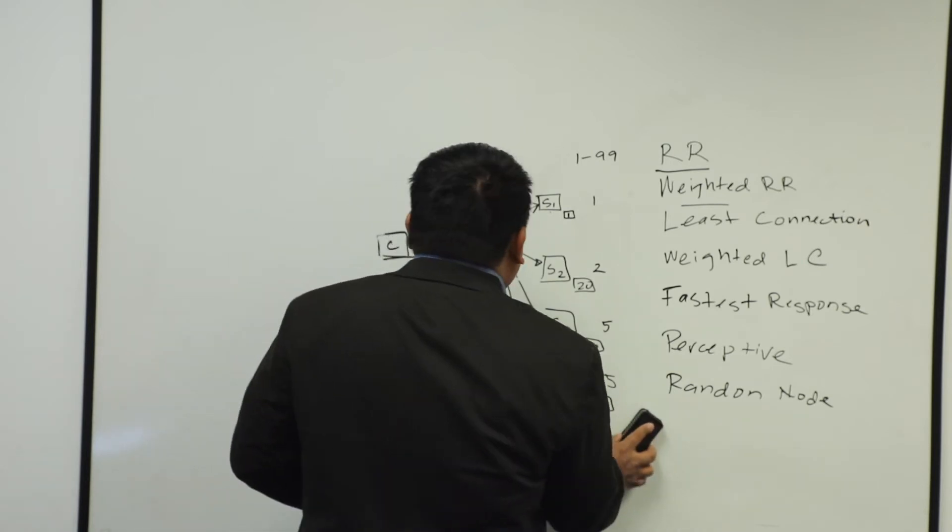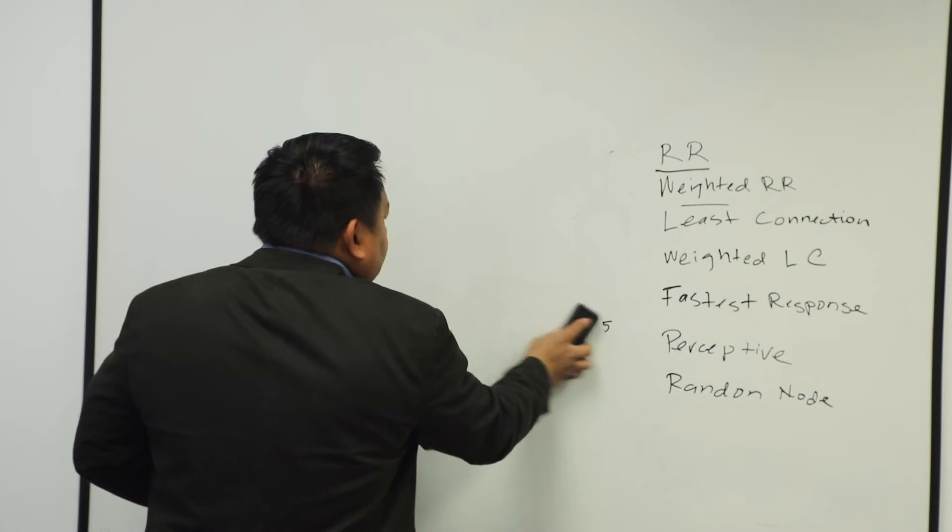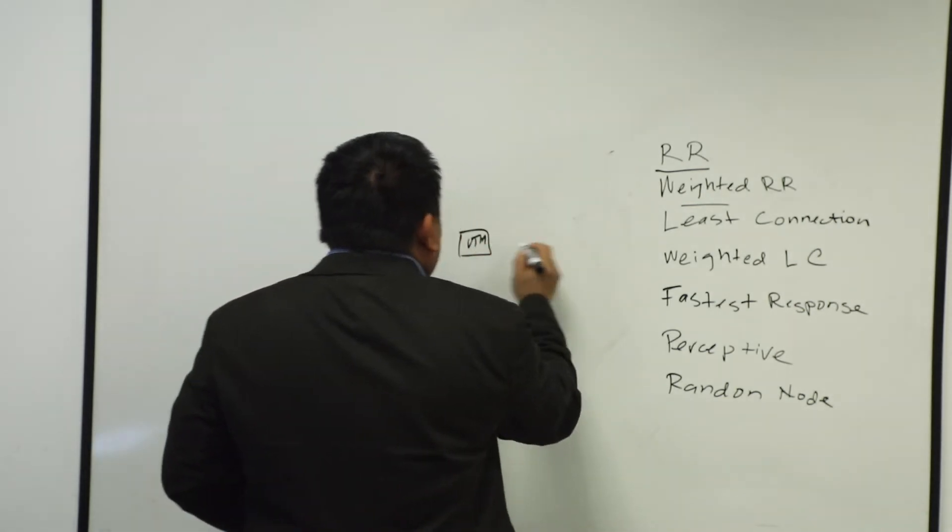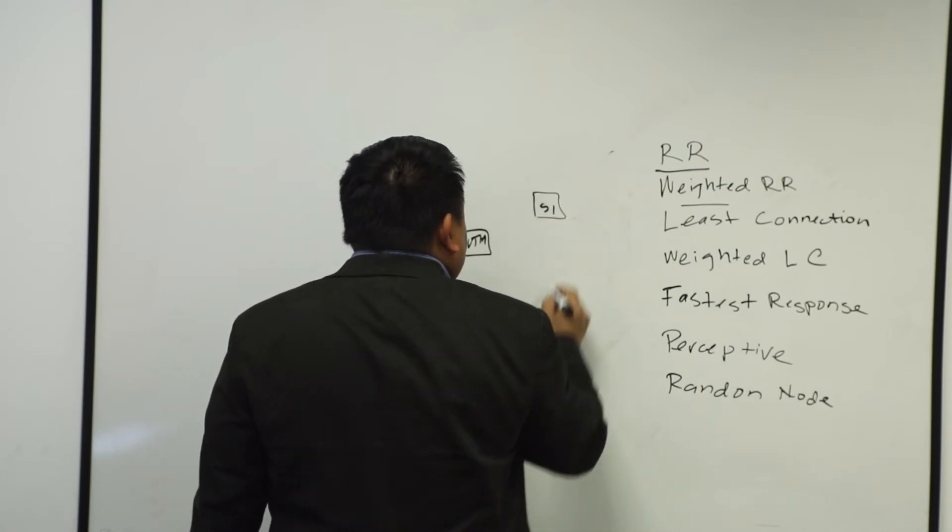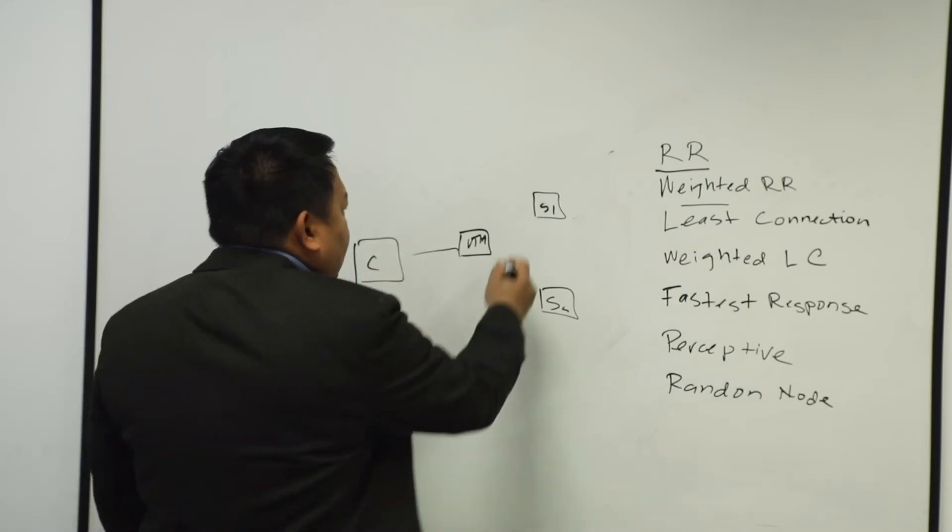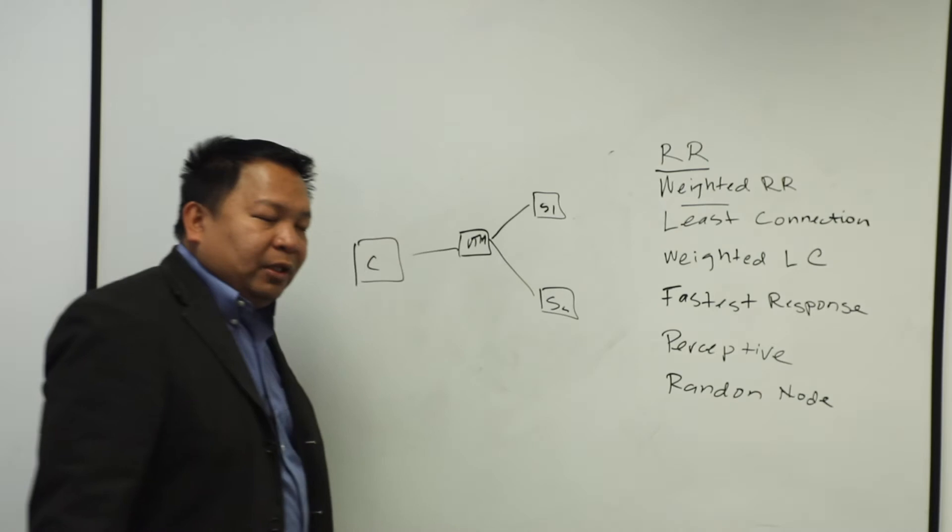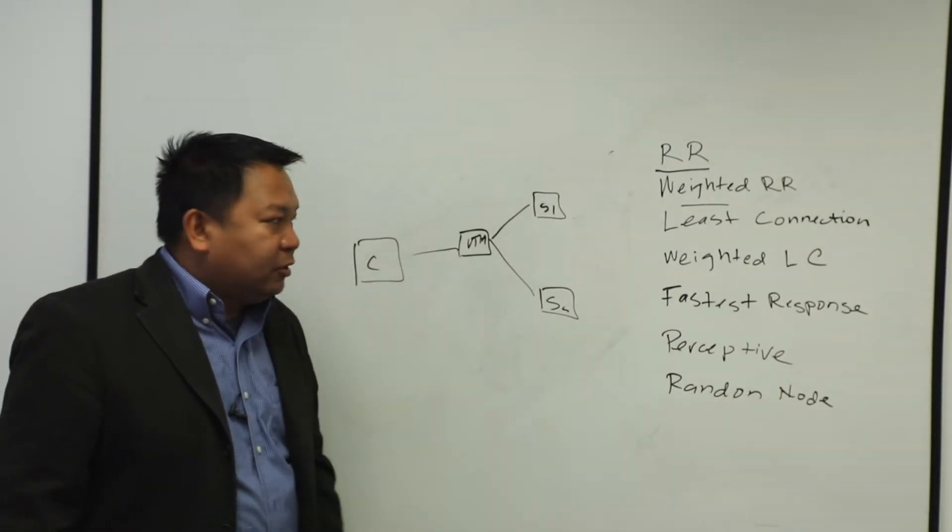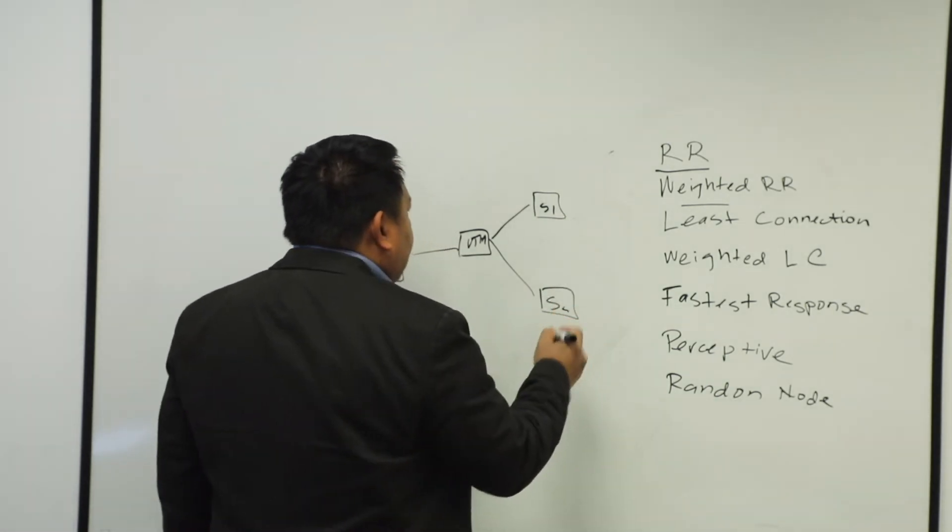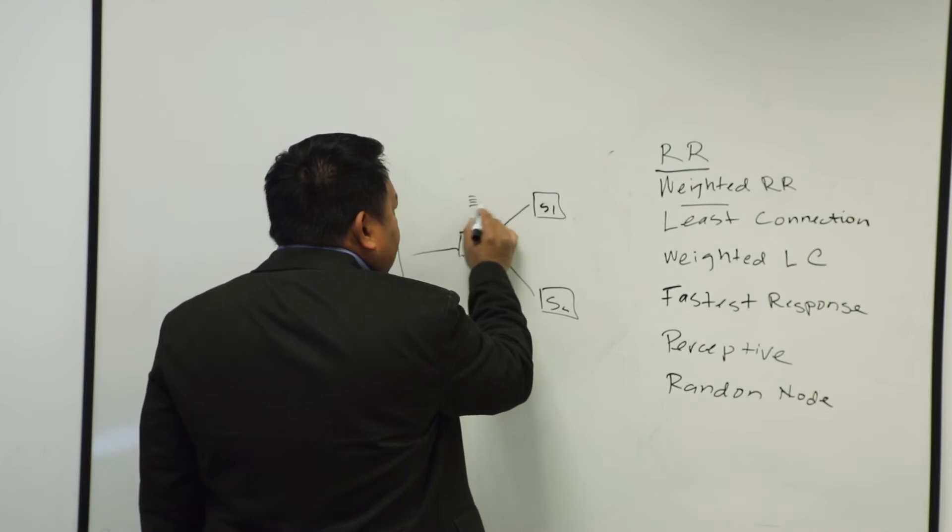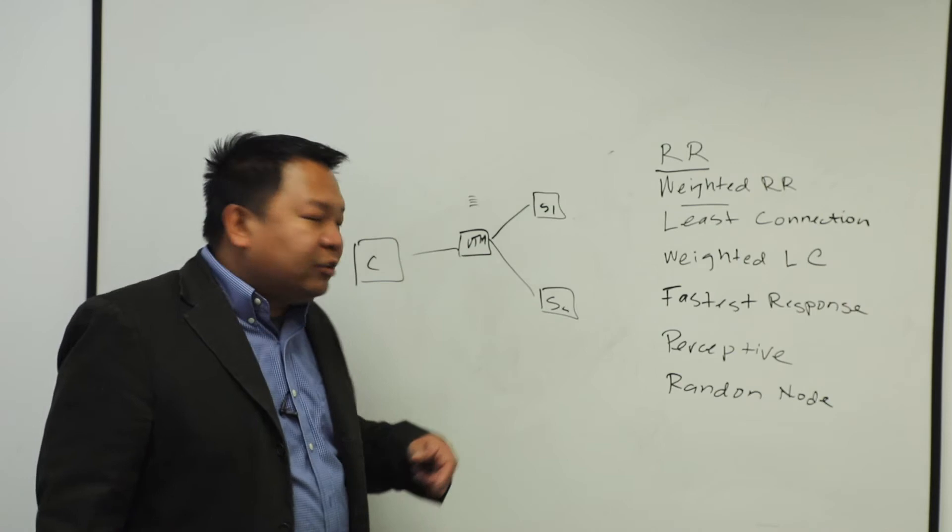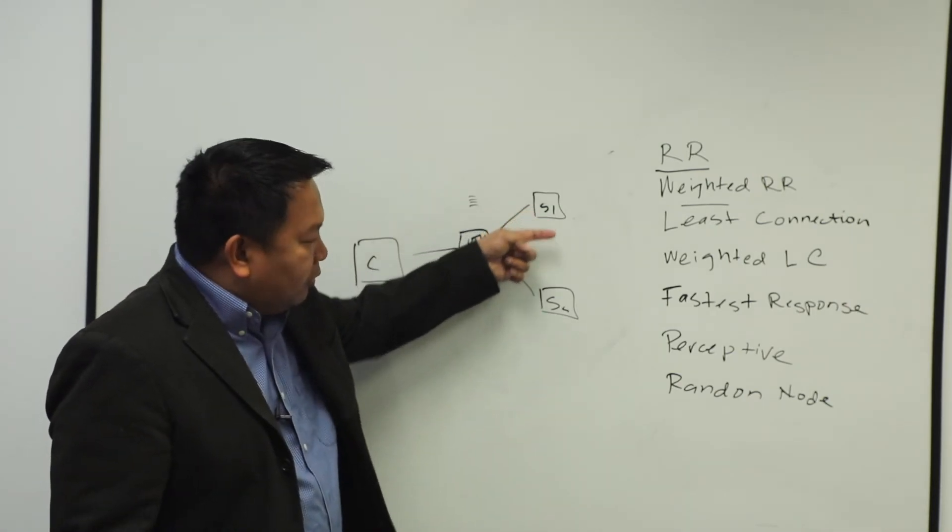Now, let's go to least connection. Let me redraw this again. We have VTM. You got to always have the VTM. We have the servers: server one, server two. You have your client accessing. Least connection is pretty much what the VTM, the traffic manager is doing, it's checking on all these servers or nodes on the backend. And it does a calculation on the VTM, who has the least connection across either between server one or server two.